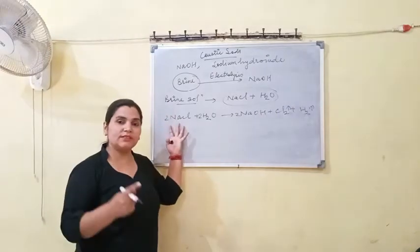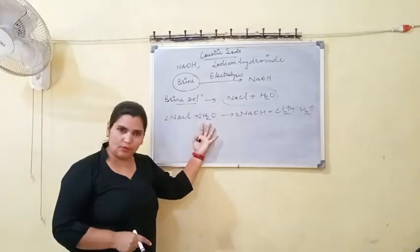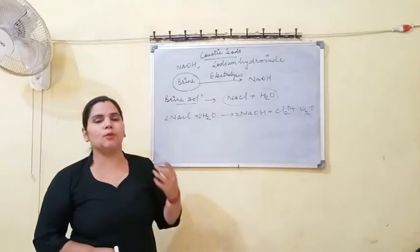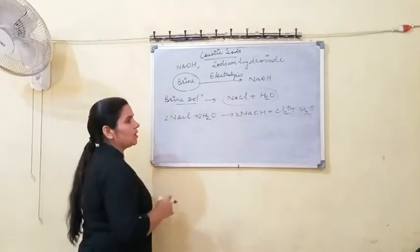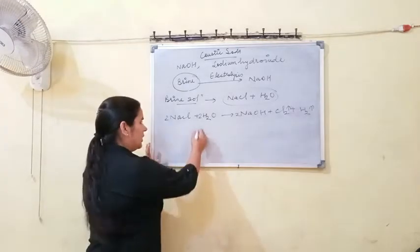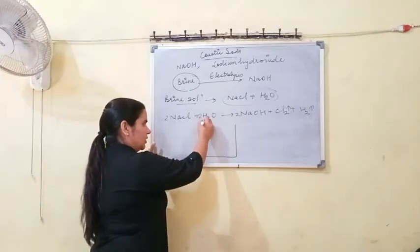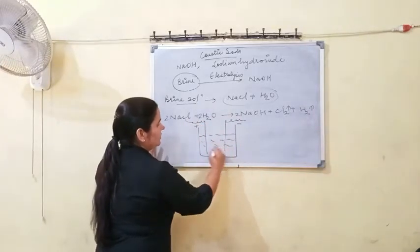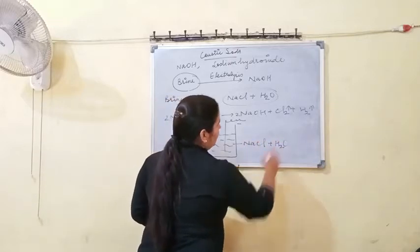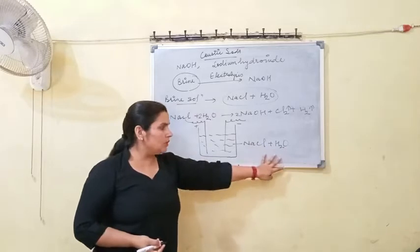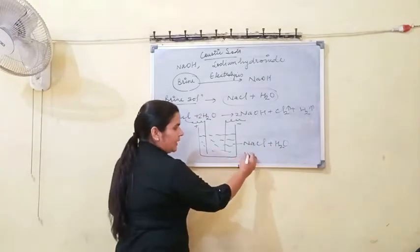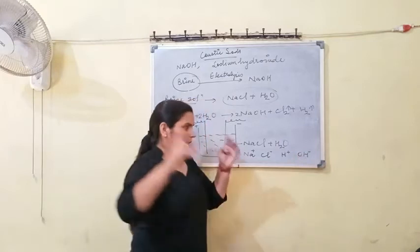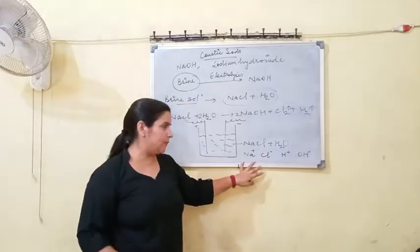To extract ions from NaCl, we require water. When we perform electrolysis of NaCl in water, we get sodium hydroxide along with the evolution of chlorine and hydrogen gas. Now, if you dissolve NaCl in water, it forms four types of ions: Na⁺, Cl⁻, H⁺, and OH⁻.